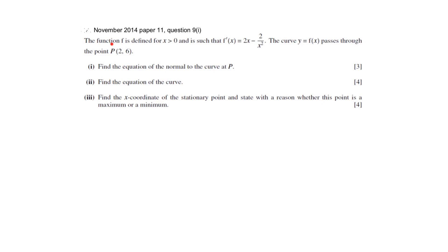In this question the function is defined for x greater than 0 and is such that f prime of x is 2x minus 2 over x squared. The curve y equals f of x passes through the point (2, 6). You are being asked to find the equation of the normal to the curve. In order to find the equation of the normal at point P, you must have the coordinates of P, which are already given, and find the gradient of the normal to the curve at P.